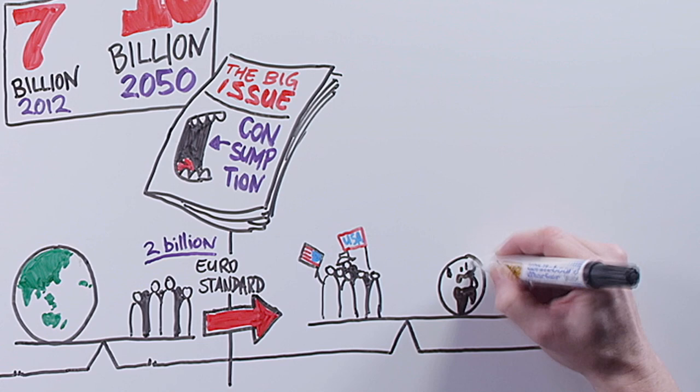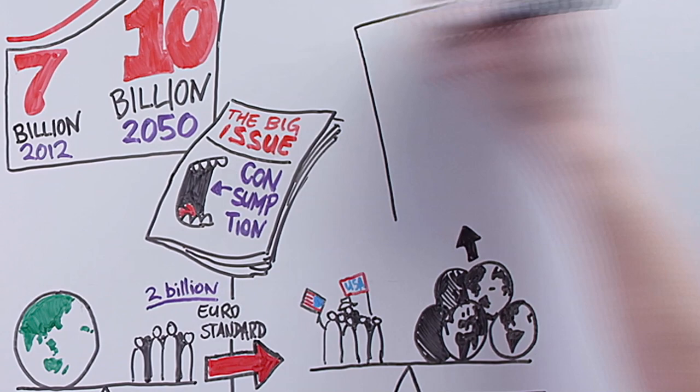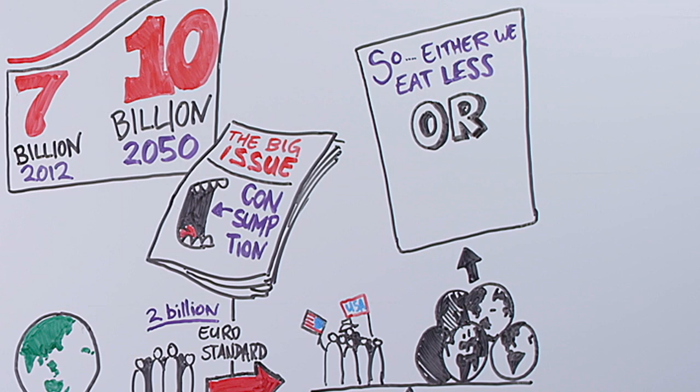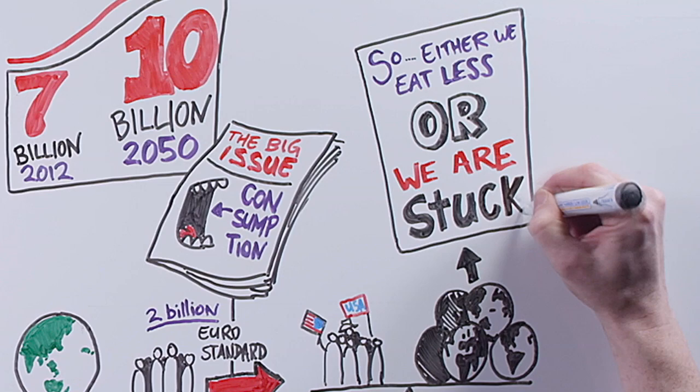However, Europeans and Aussies use only about half of the resources of the average American. If all the world's 7 billion people consumed as much as the average American, it would take the resources of over 5 planet Earths to sustainably support all of us. So either we eat less to allow them to eat more, or we are stuck.